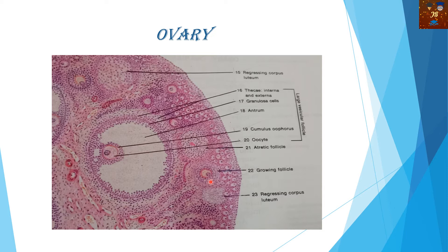The oocyte in the growing follicle is also slowly growing. So these two are the identifying characters: the presence of matured and immature Graafian follicles. Here you can also see a lump of cells which is called the corpus luteum, and it is totally filled up by lipid materials. When the ovum is not present, that structure is called the corpus luteum. These two are the main identifying features of the mammalian ovary.